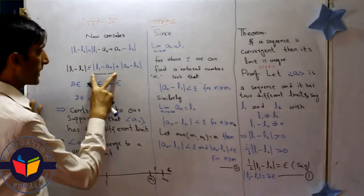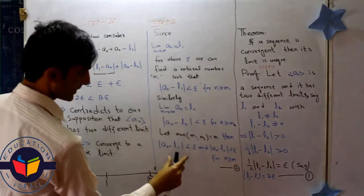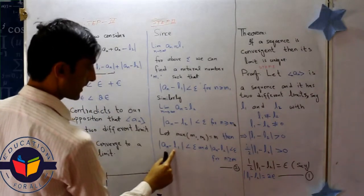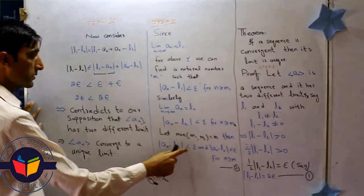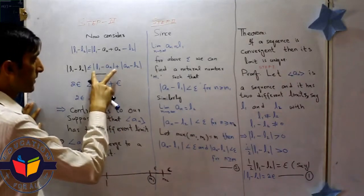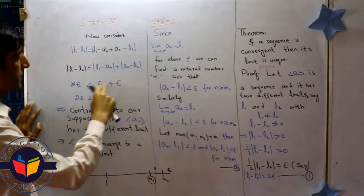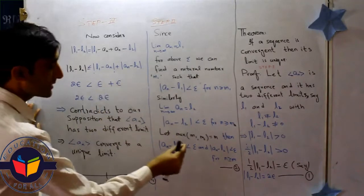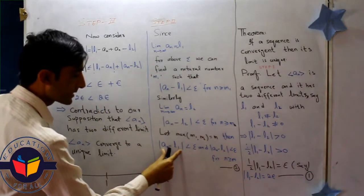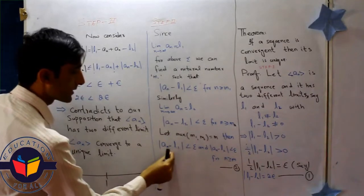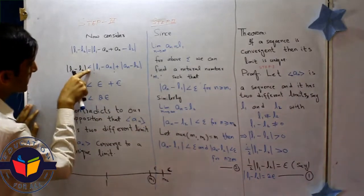I substitute the value: l1 minus a_n minus l1 is less than epsilon. So I can write in place of this value is epsilon, and here is epsilon. Since this value is greater than this, it should be greater than, so we can change this sign and write this form.